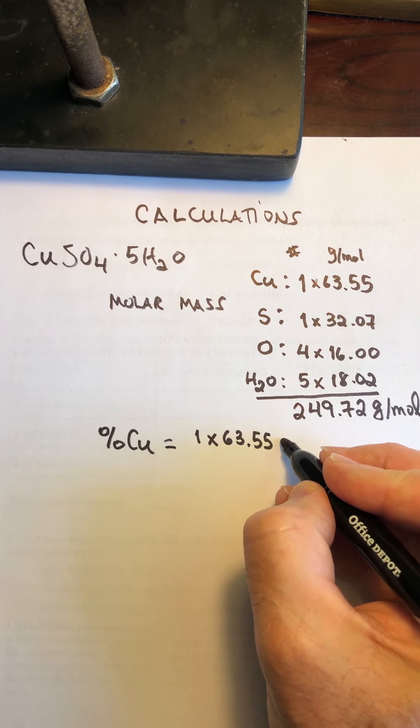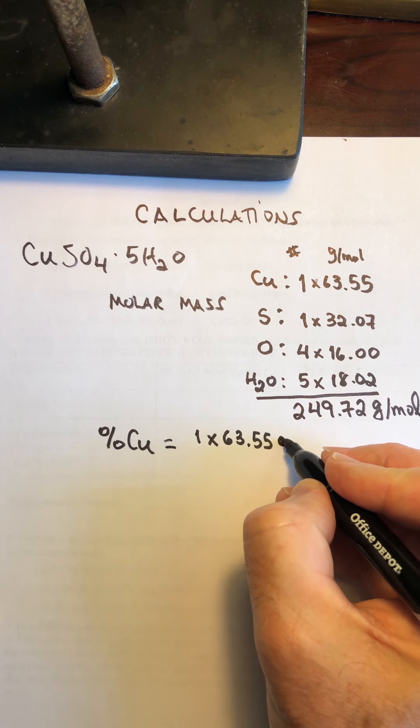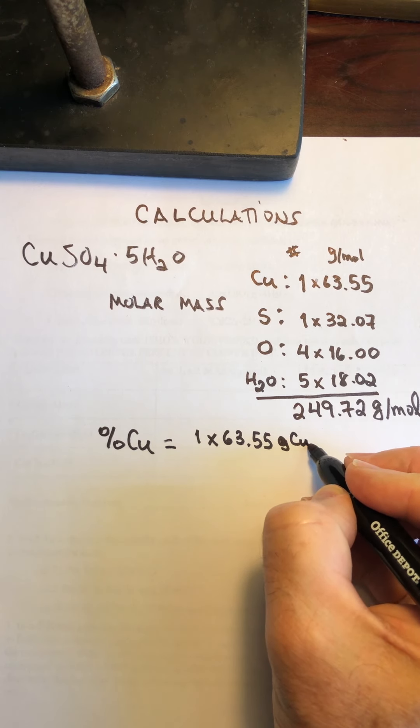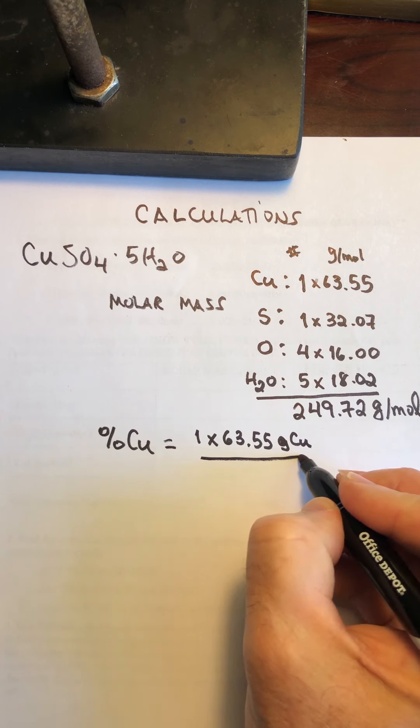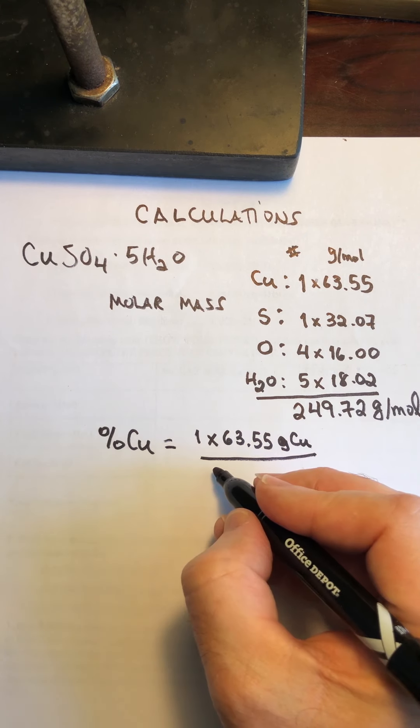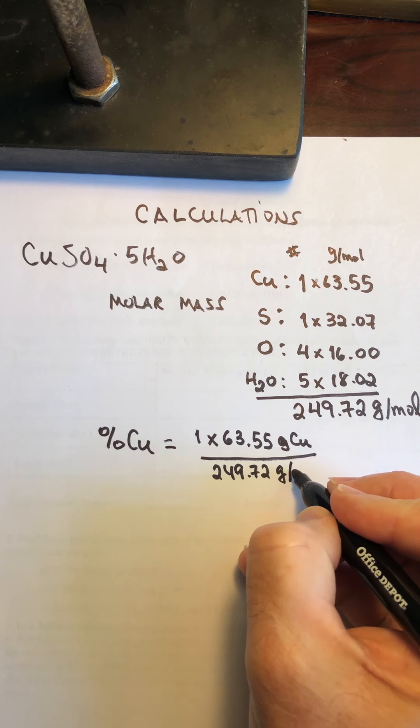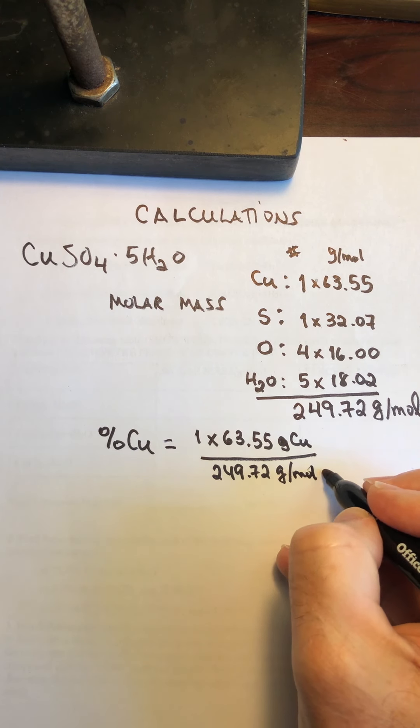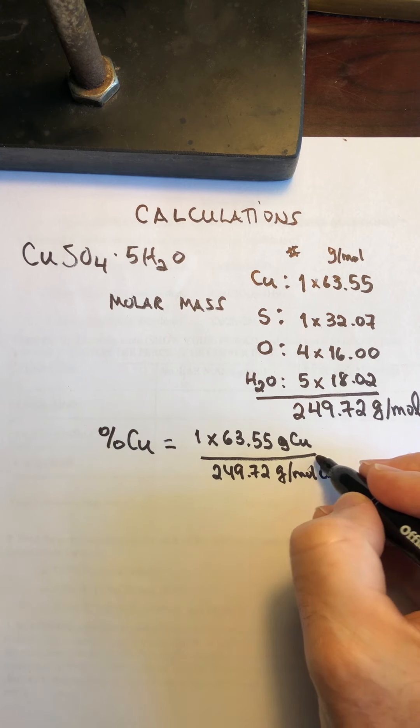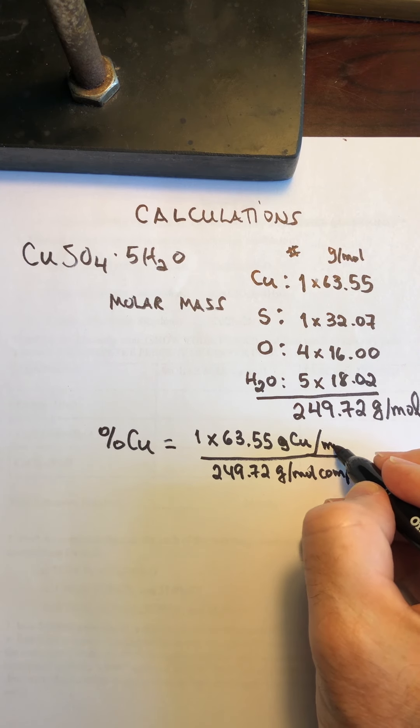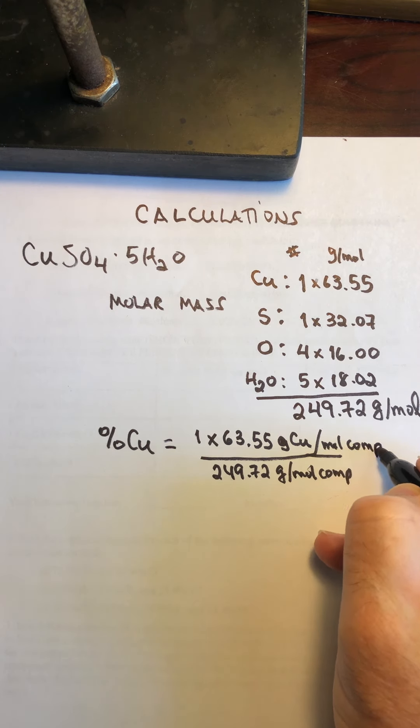In the compound, divided by 249.72 grams per mole of compound. Let me write that over here. Per mole of compound. Sorry for my bad handwriting, but I think you can tell what it says in there.